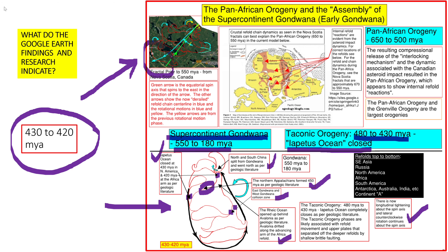The Rheic Ocean opened up behind Avalonia. As per geologic literature, Avalonia drifted along the advancing arm of the Africa refold — that matches my model with the closing of the Rheic Ocean. The Taconic Orogeny, which existed between 480 and 430 million years ago — at 430 to 420 million years ago the Iapetus Ocean completely closes. Taconic Orogeny phases are likely associated with refold movement and upper plates separated off the deeper refolds by shallow brittle faulting — like the shards of glass I was describing — while the deeper ductile refolds are the boats driving everything.